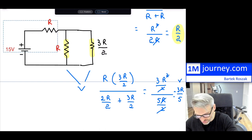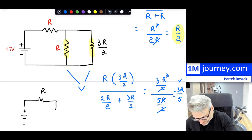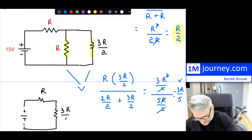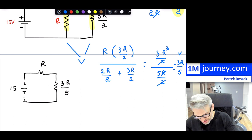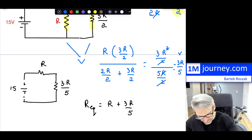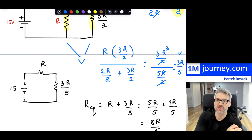Once you do that, it becomes really simple. You have one remaining resistor R in series with 3R/5. So the equivalent resistance is R plus 3R/5, which is 5R/5 plus 3R/5, giving 8R/5. That's the equivalent resistance for the entire circuit.